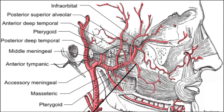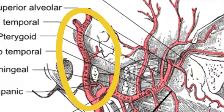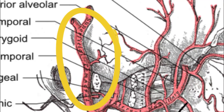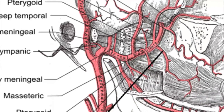Moving on to the vessels, you've got the superficial temporal artery and vein, the auriculotemporal nerve, posterior auricular artery, and the facial nerve. From the intraparotid plexus, you've got the retromandibular vein. One important thing is the carotid bifurcation in this region.